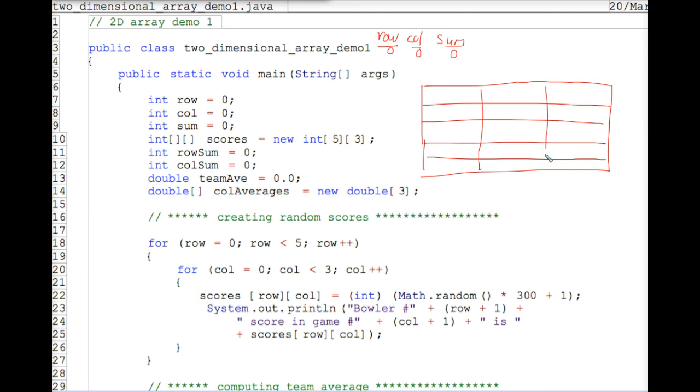That, of course, has enough space to hold 15 values, and in this case they're going to be whole numbers because of the int data type. We also have a variable rowsum, initialized to zero. As you see, column sum, team average, 0.0 because it's a double, and column averages, which is a one-dimensional array.